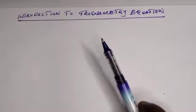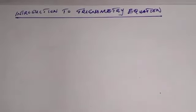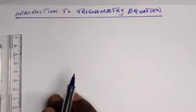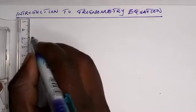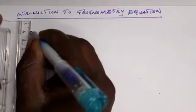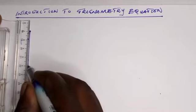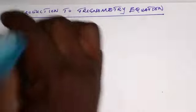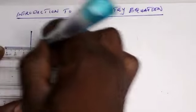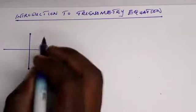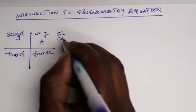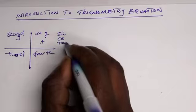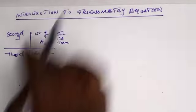We are looking at an introduction to trigonometric equations. First of all, in trigonometry equations there are some principles which you should follow, which involve the quadrants. In the first quadrant, we have sine, cos, and tangent — all positive.